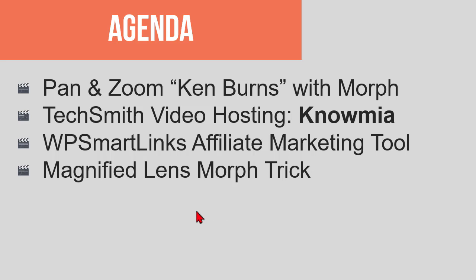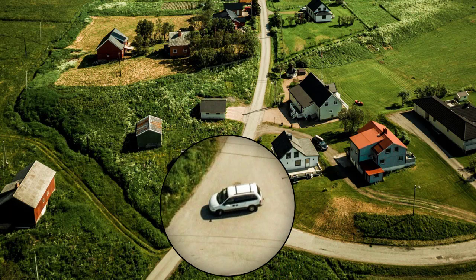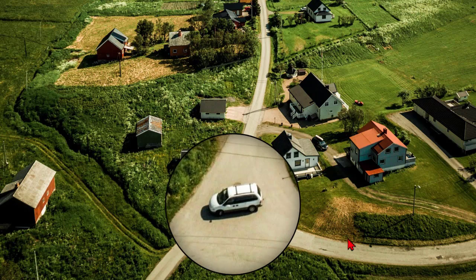Let's take a look at a trick called the magnified lens morph trick. Here I have a nice big high-res picture, and watch what happens when I click. A little magnified lens comes in from the outside, and as it moves across the screen, it is magnifying as it goes.